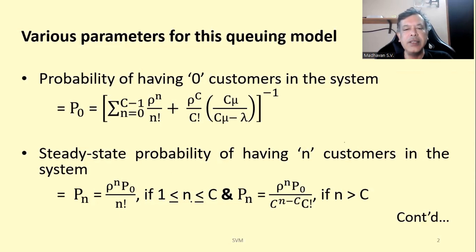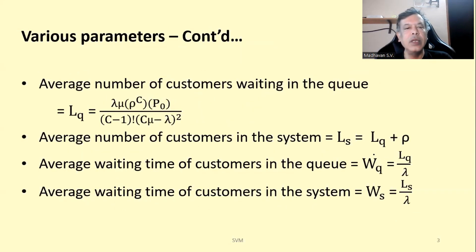If n is greater than C, then we use the formula P_n equals rho to the power n times P0 divided by C to the power (n minus C) times C factorial. Further, we can find the average length of the queue, L_q, equal to lambda·mu times rho to the power C times P0 divided by (C minus 1) factorial times (C·mu minus lambda) squared.